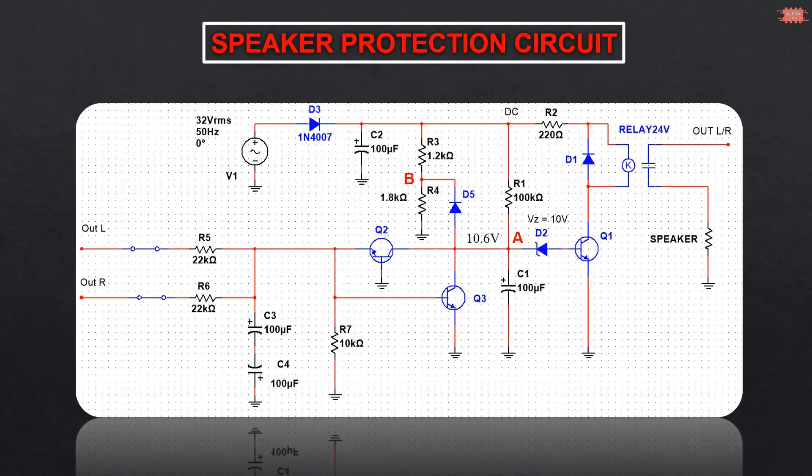The resistors R5 and R6 are used to isolate the speaker output from the speaker protection circuit. Resistor R7 combines with R5 and R6 to form a voltage divider circuit to protect transistors Q2 and Q3.